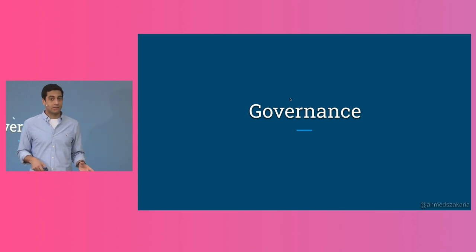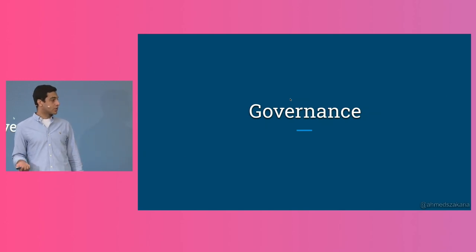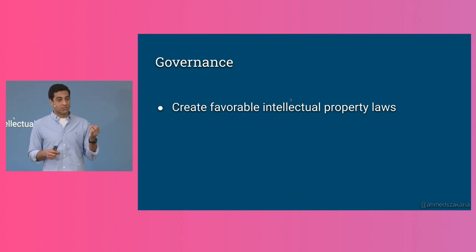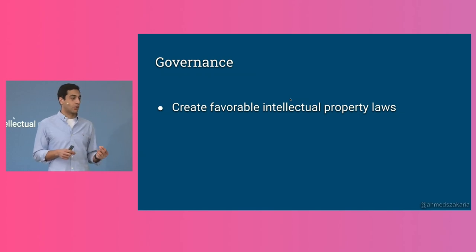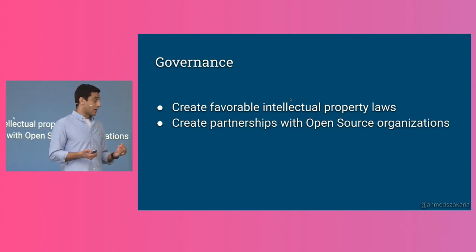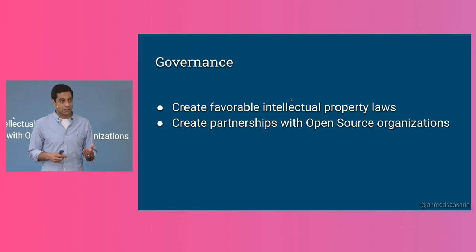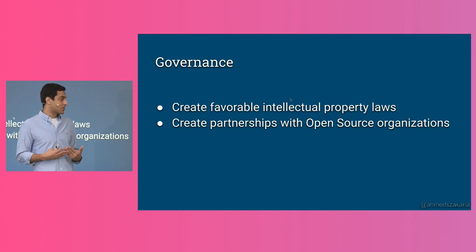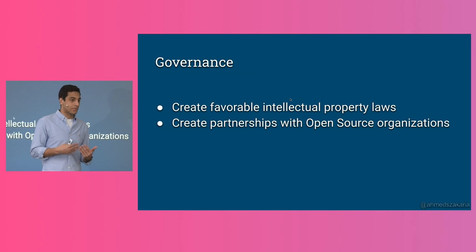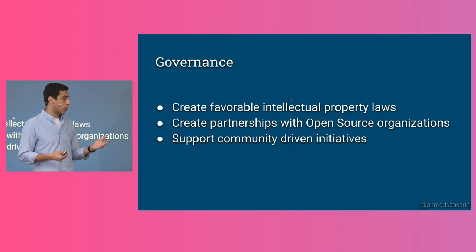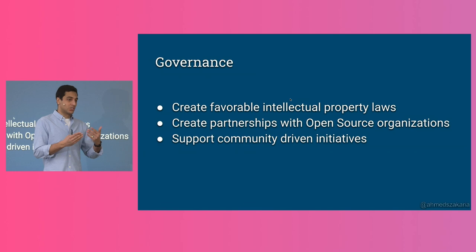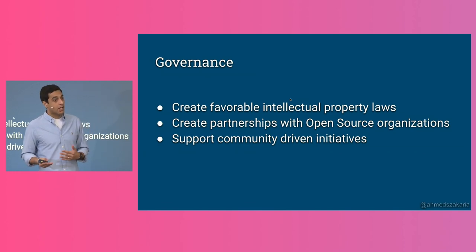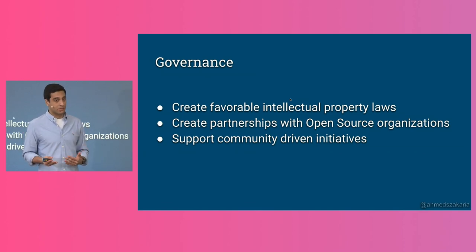Next is government governance, which is 100% on governments — and hopefully can happen at some point. Creating favorable intellectual property laws that would protect open source contributions and developers would be the first step. Creating partnerships with open source organizations and foundations like the Linux Foundation, Apache Foundation, and Eclipse to start campaigns and community building would be very beneficial. And supporting community-driven initiatives instead of shutting them down and monitoring them out of fear of new ideas being implemented in society — supporting them would be much, much better in these cases.